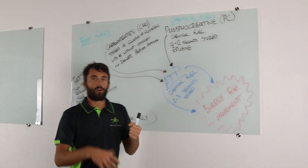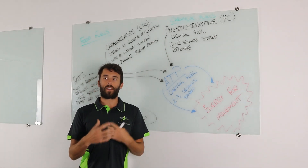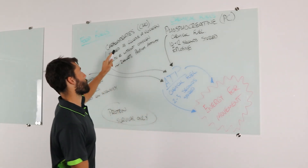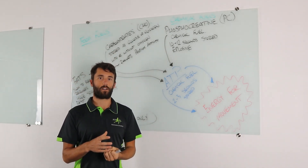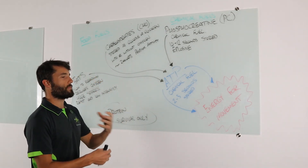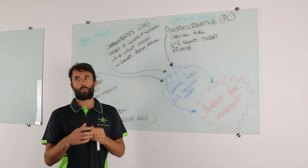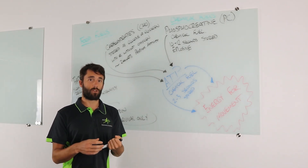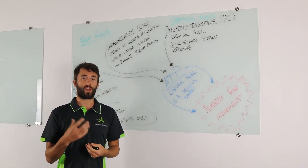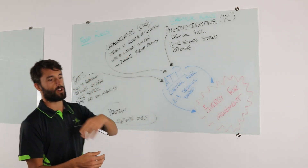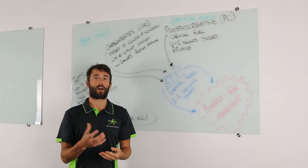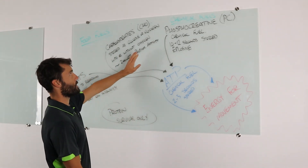We can break carbohydrates down with or without oxygen. At the start of activity, while our acute responses are low — we're not breathing heavily, heart rate is low, oxygen supply isn't high — we can still break down carbohydrates to get energy. That's our anaerobic glycolysis, using glycogen as a fuel source. We can break them down really quickly and get energy at a high rate, but lactic acid as a byproduct means we'll fatigue quickly. This makes anaerobic glycolysis really helpful for high intensity activity like a 400 metre sprint.